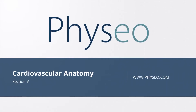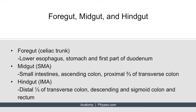Welcome to section 5 of cardiovascular anatomy. In this section, we will discuss the gastrointestinal arteries. When you think of the gastrointestinal arteries, it's best to break it up into three components: the foregut, the midgut, and the hindgut.